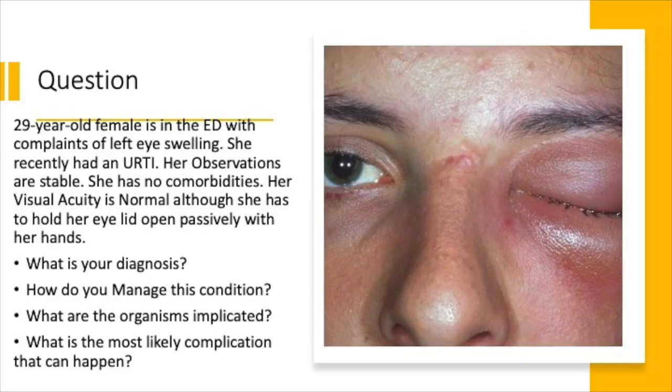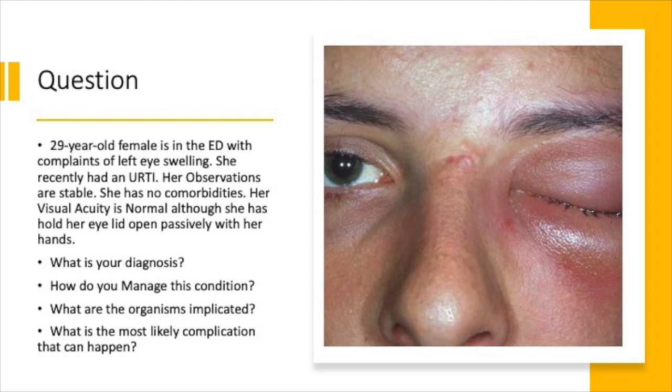Here's another question: a 29-year-old female in the emergency department with left eye swelling following a recent upper respiratory tract infection. Her observations are stable, no comorbidities, visual acuity is normal, but she has to hold her eyelids open passively with her hands. What is your diagnosis, how do you manage this, what organisms are implicated, and what is the most likely complication? For exams, always think the worst — consider orbital cellulitis unless proven otherwise.